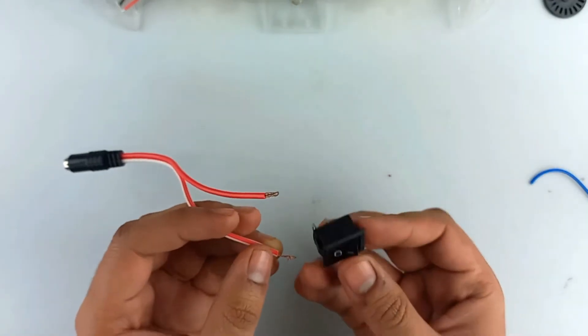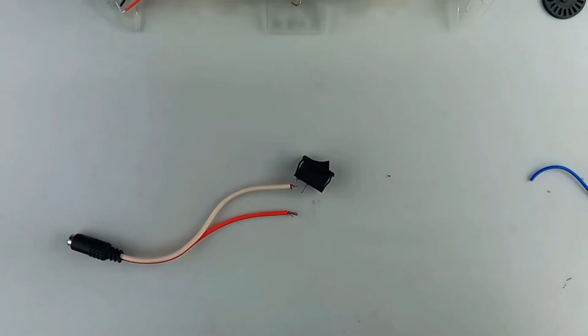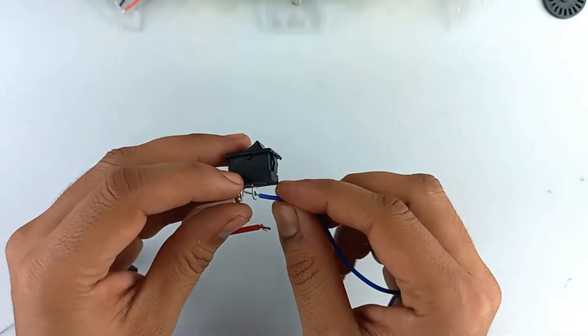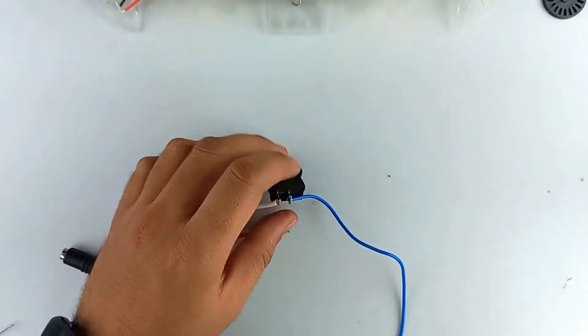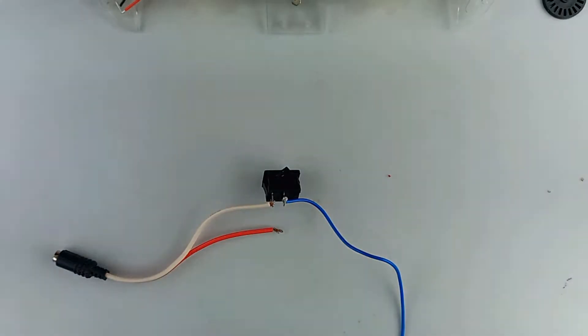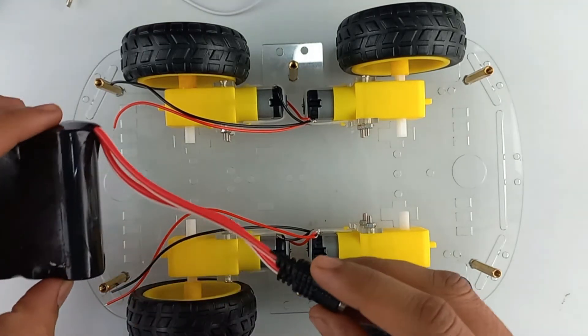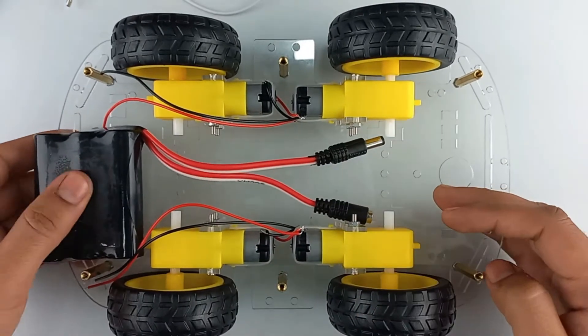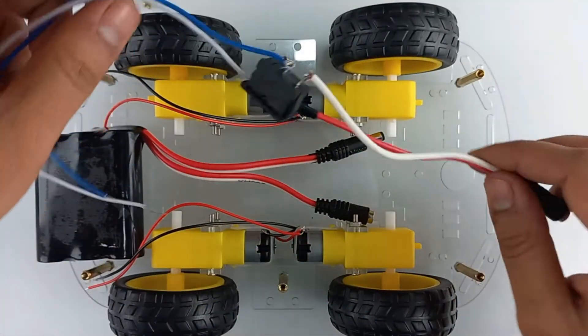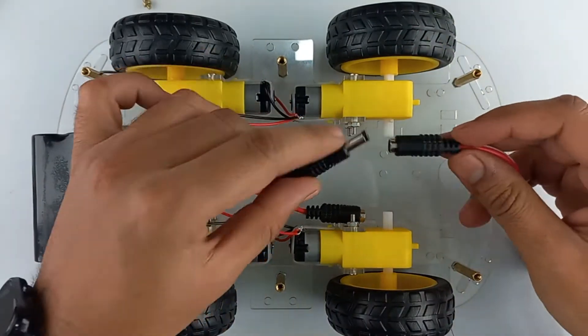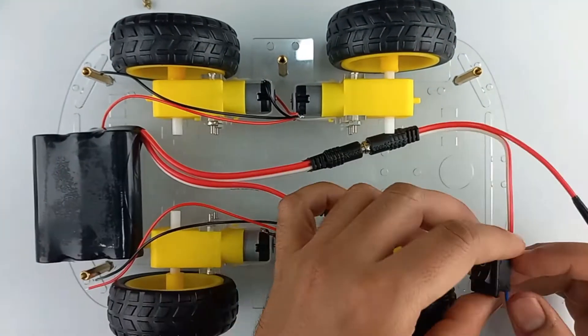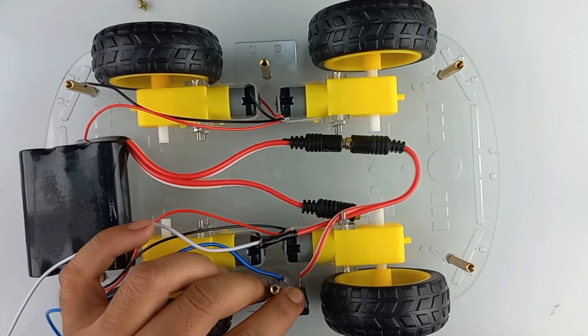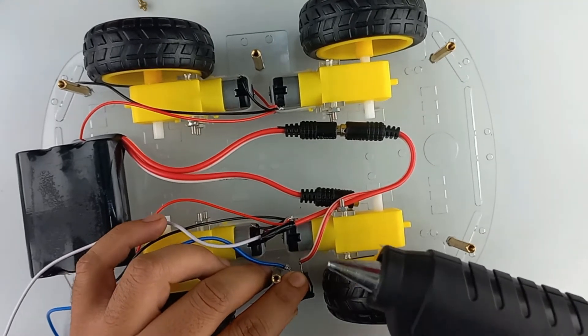Now solder a battery connector with the on-off switch. Now place the 12 volt battery over here. Now take the battery connector, connect it to the battery, and place the on-off switch over here and attach with the help of hot glue gun.